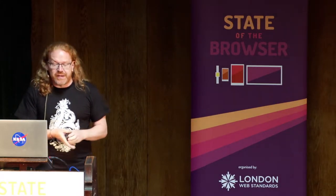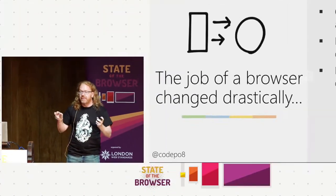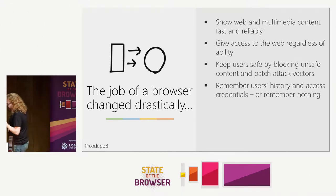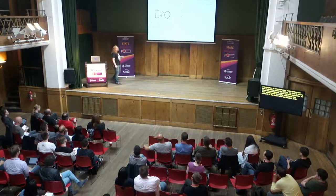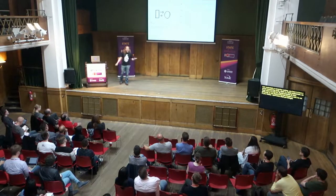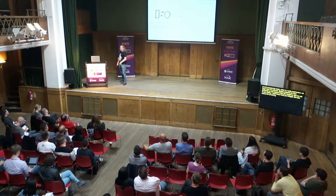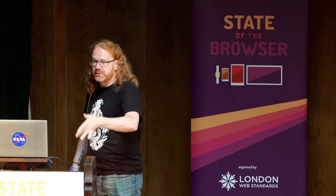Browsers have to remember users' history and access credentials, or remember nothing — you have to have a private browsing mode, which is always quite a euphemism. We know what it's used for: buying presents for your girlfriend so she doesn't know. But also, typing on a mobile phone is terribly annoying, so having autocomplete for emails, credit card numbers, telephone numbers, and addresses is great — unless only I get access to that, not some random ad or third-party JavaScript on the page.